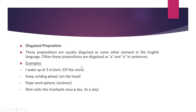Disguised prepositions are usually disguised as some other element, often as 'a' or 'o.' For example: 'I wake up at 5 o'clock' — o'clock means 'of the clock.' 'Keep striding ahead' — ahead means 'on the head.' 'Hope went ashore' — 'a' here means 'on shore.' 'Bring me visits to the riverbank once a day' — once a day means 'in a day.' These are all disguised prepositions.